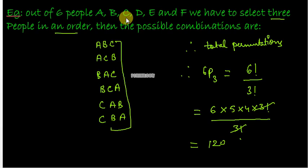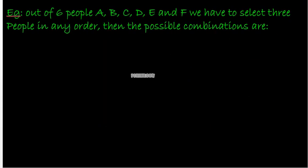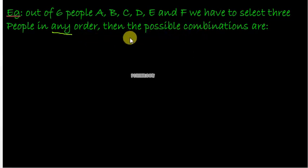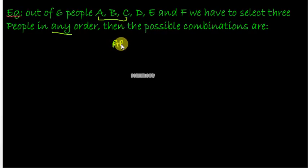But in the same question, if we say out of six people you just have to select three people in any order — that means the order does not matter — then the possible combinations are: if you select three people A, B, C, that's one combination. Order doesn't matter here, so you just select three people out of six.